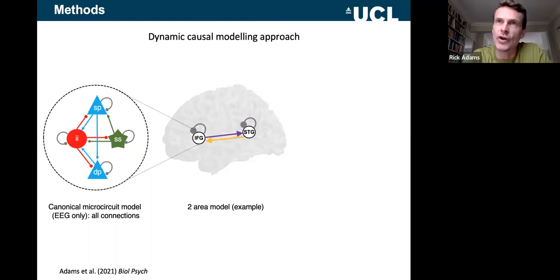And one way to try to infer what is going on in vivo is to use this dynamic causal modelling approach that Richard was talking about in his presentation. And as he mentioned, we essentially have this microcircuit model containing superficial pyramidal cells, deep pyramidal cells, interneurons, and spiny stellate cells.